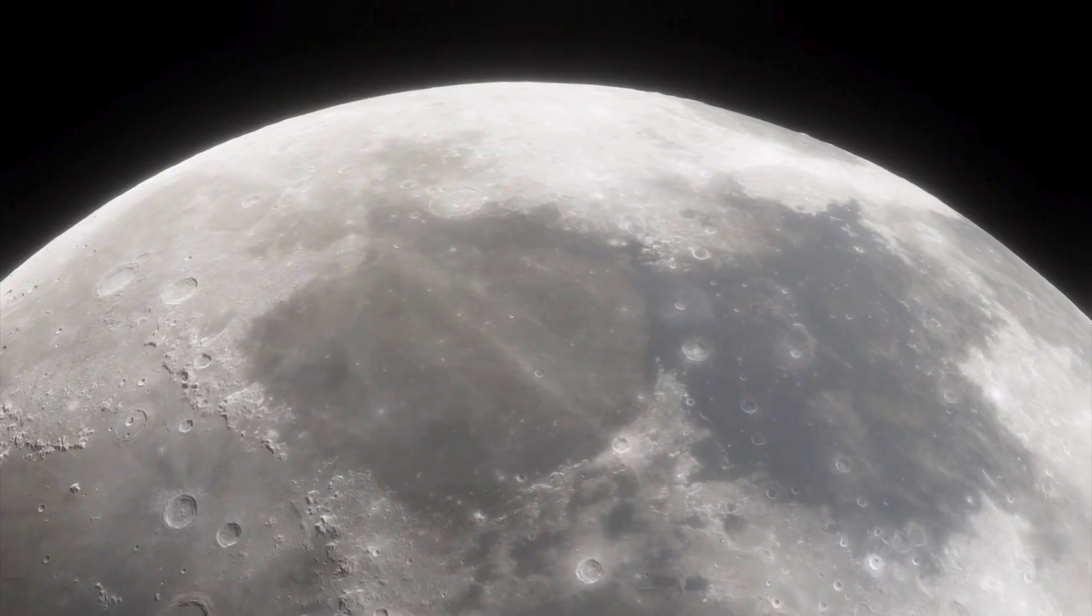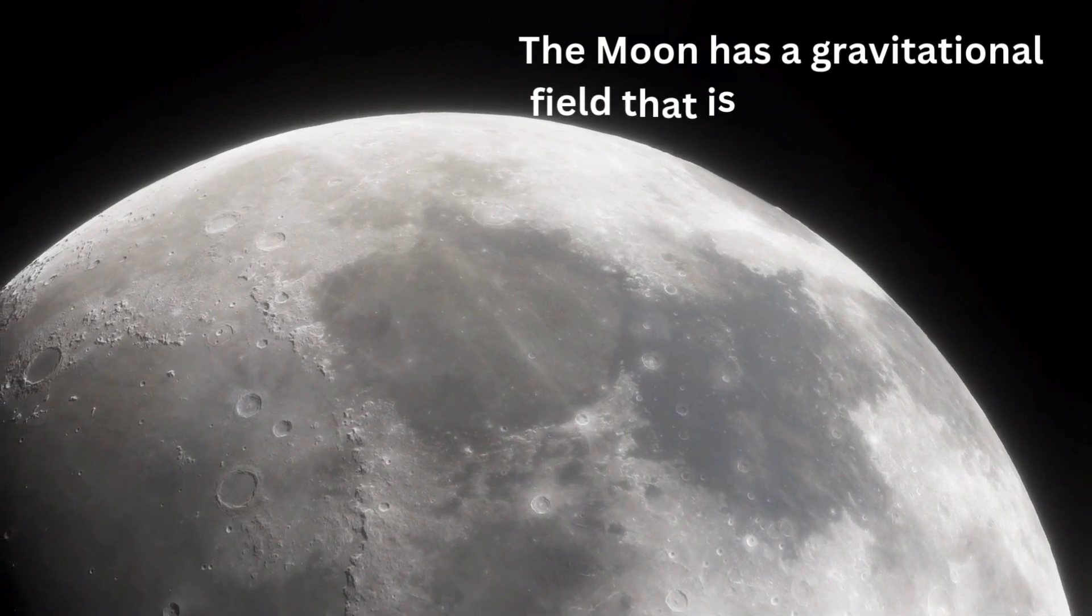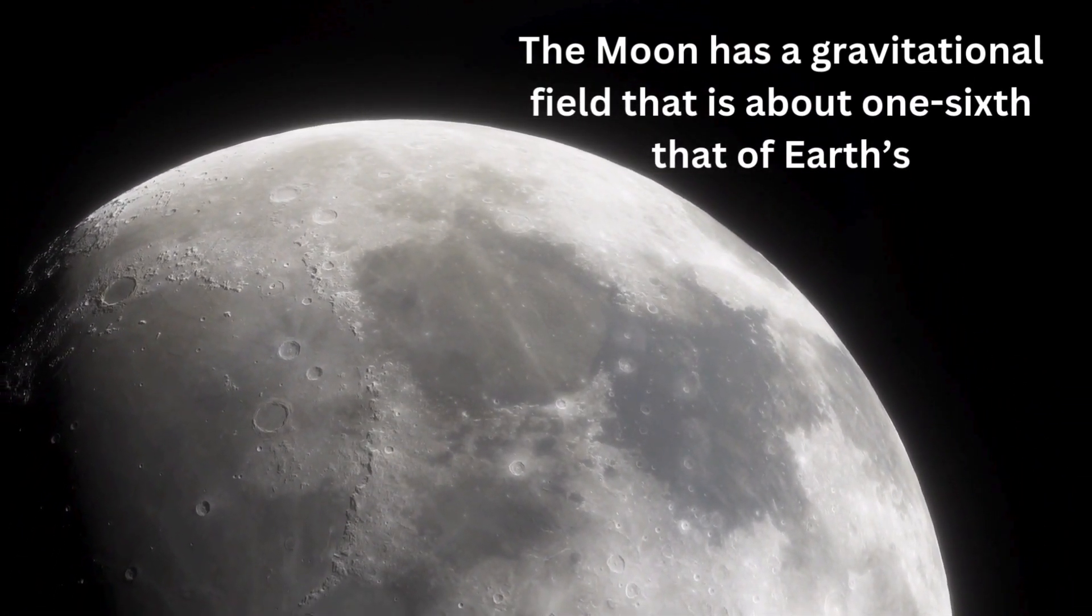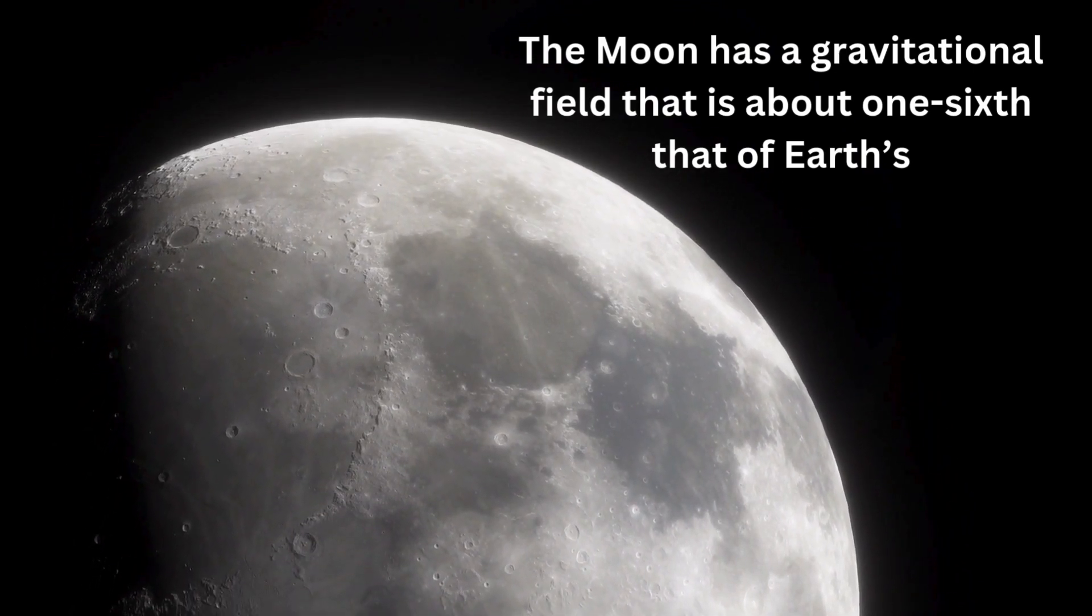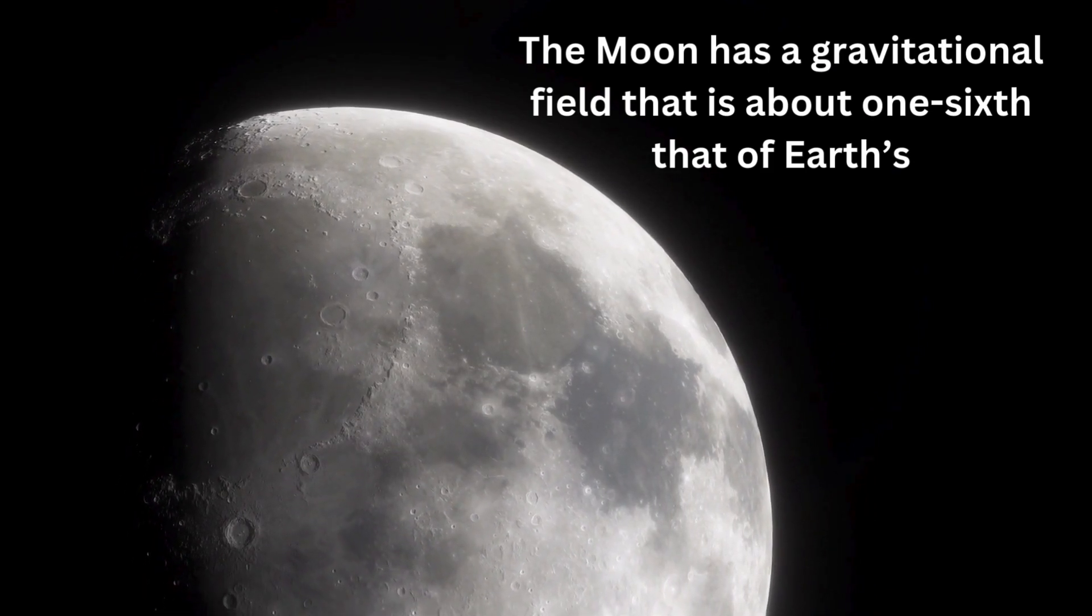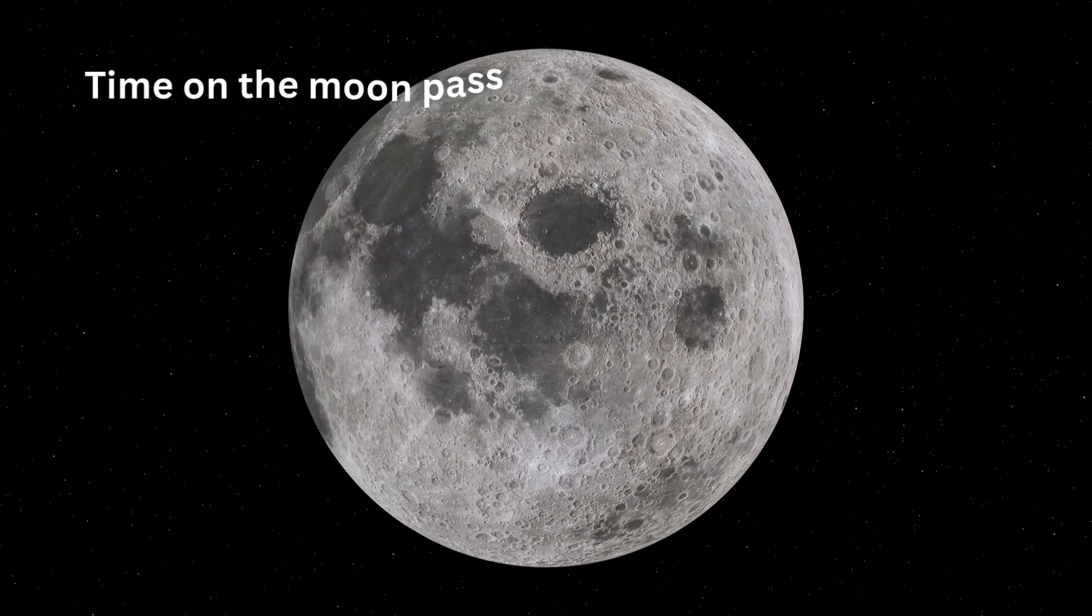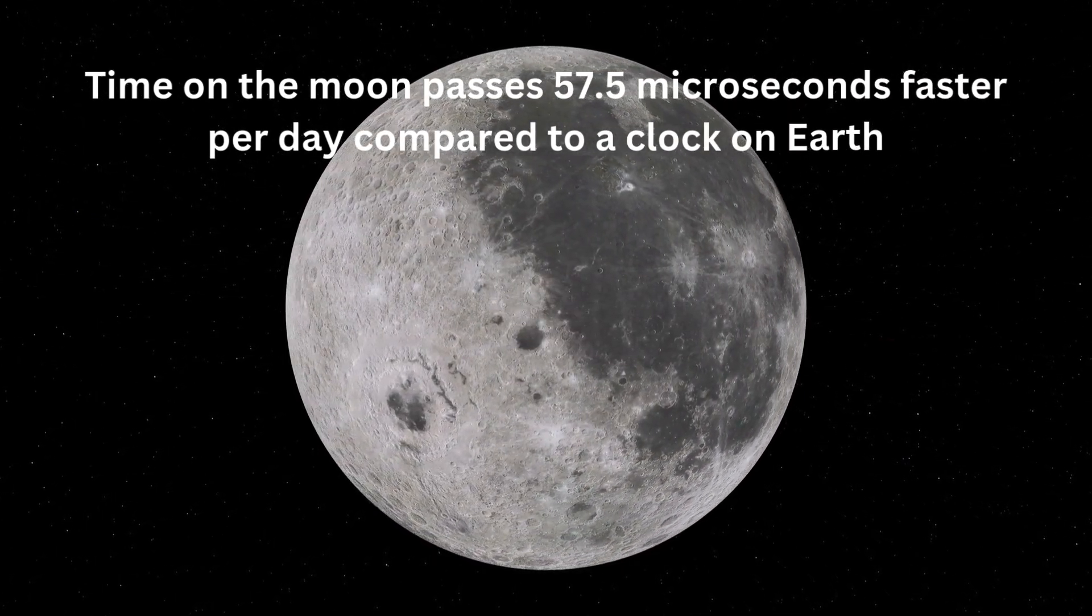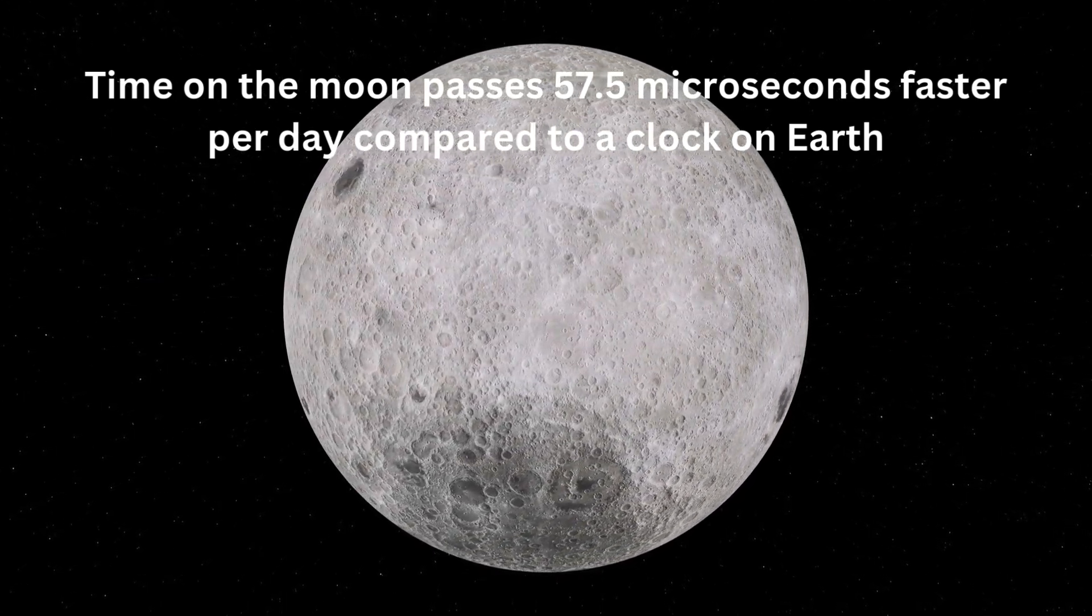The moon's gravitational field is weaker than Earth's. The moon has a gravitational field that is about one-sixth that of Earth's. Therefore, time flows slightly faster on the moon compared to Earth. However, the difference is much smaller than on the sun. We can estimate that a clock on the moon would run about 0.005 seconds faster per day. That is, time on the moon passes 57.5 microseconds faster per day compared to a clock on Earth. This means that an astronaut on the moon would age slightly faster than their twin on Earth.